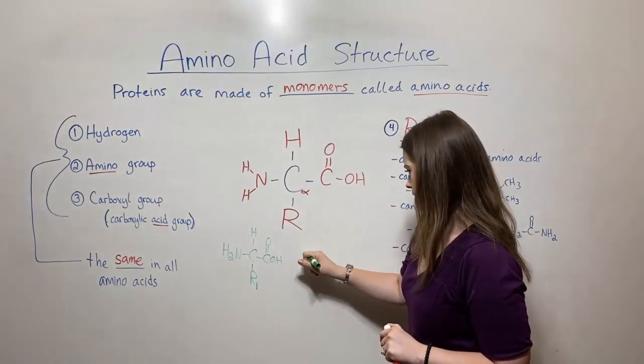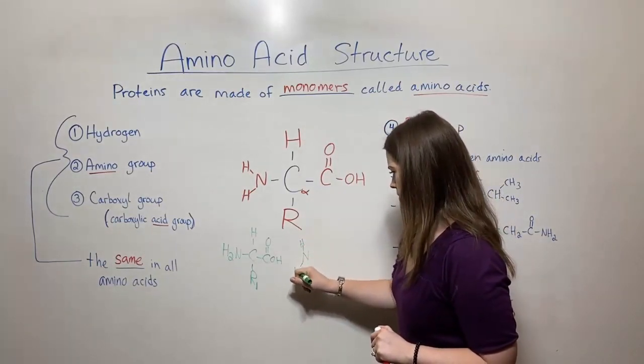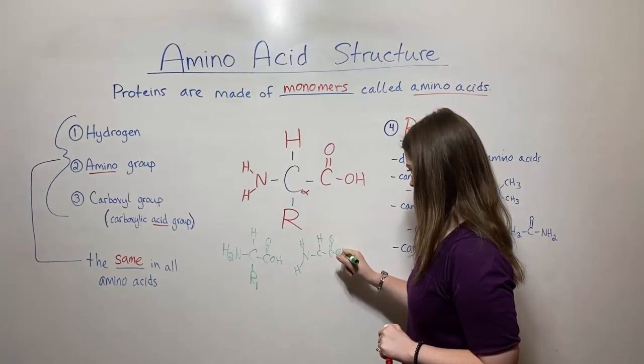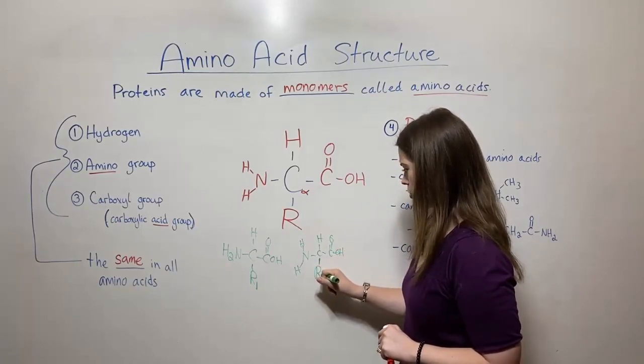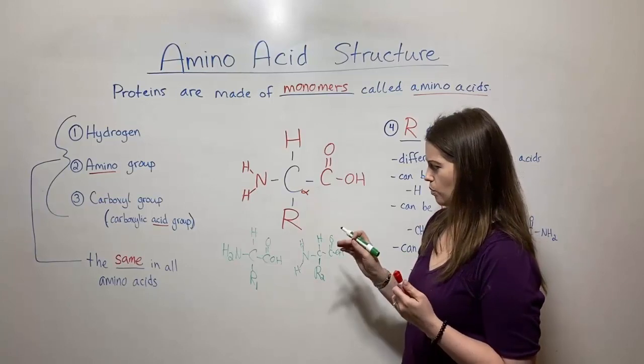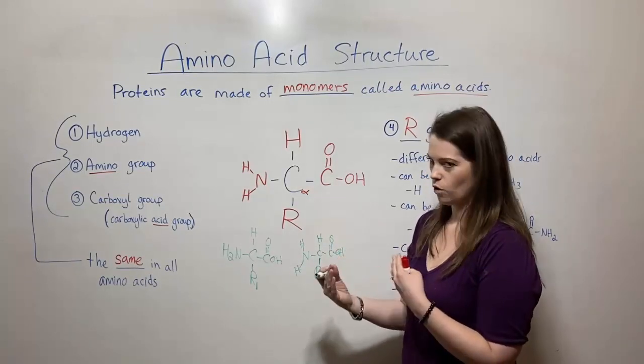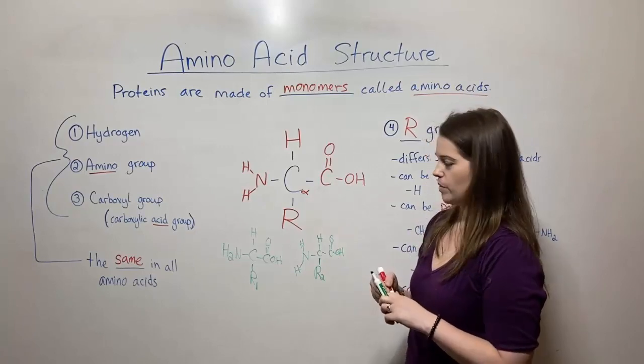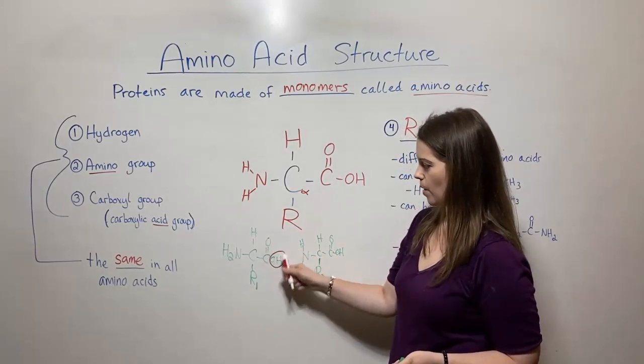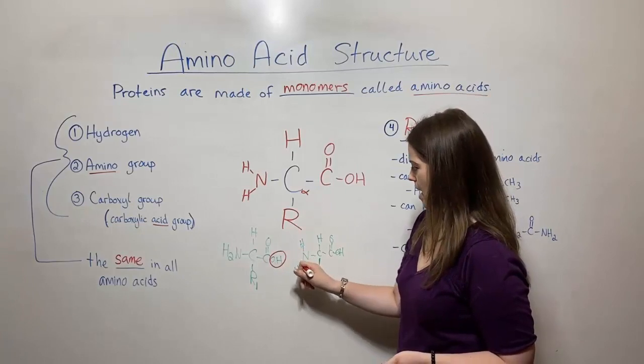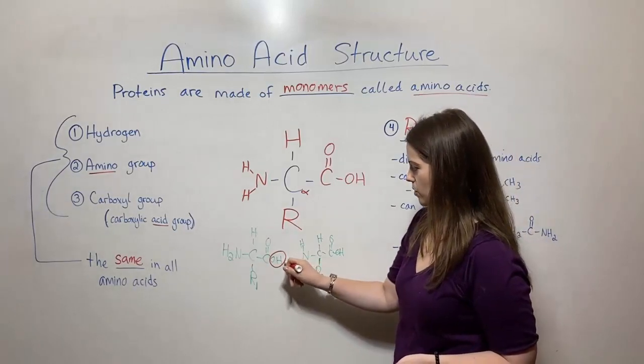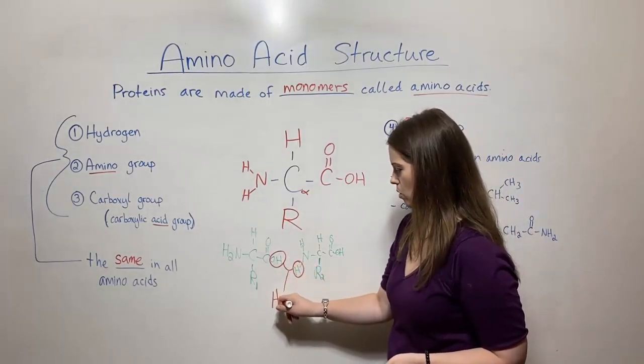And then I've got another one that I'm just going to draw generally here. And I'm going to call its R group R2 just to distinguish it from the R1 over here. So what happens when you put two of these together? How do they join together and form something called a peptide bond? Well it's through something called a dehydration synthesis reaction. You actually have this OH from the carboxyl group of the first amino acid and one of these H's from the amino group of the second amino acid.